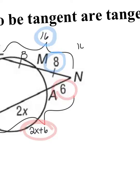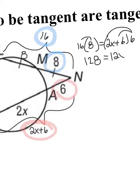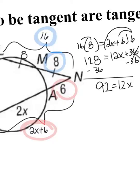The whole line times the external equals the whole line times the external. I'm going to distribute inside my parentheses. I start with 16 times 8, which is 128, equals 12X plus 36. I'm going to subtract 36 from both sides. 92 equals 12X. Then I'm going to divide by 12. When I divide, I'm going to get 7.7.